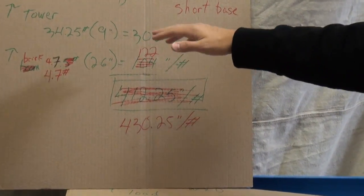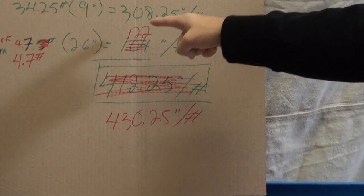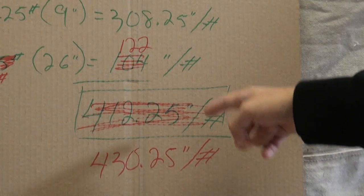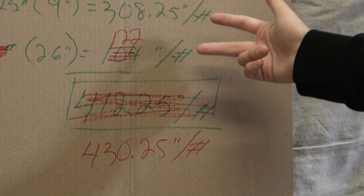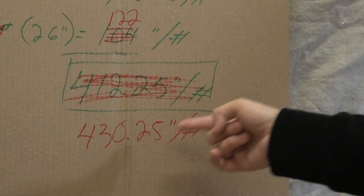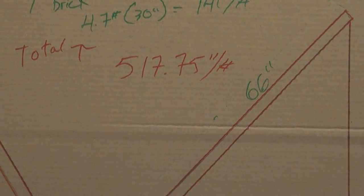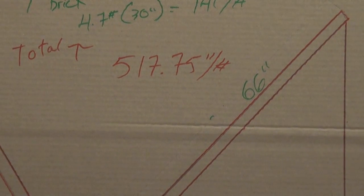So now instead of the previous torque, it's now 308.25 inch pounds, and this one's only 122 inch pounds. Add those together, we have 430.25 inch pounds of torque. And before we had 517. Because the distance decreased, so did the torque.